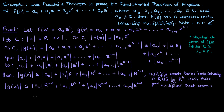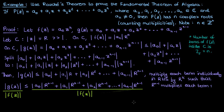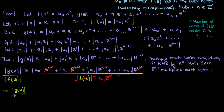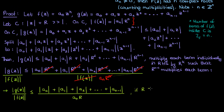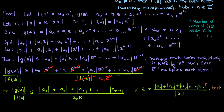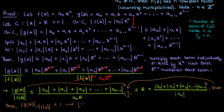Dividing both sides of the inequality by the modulus of f — which is positive, so the sign doesn't change — and substituting |f| = |a_n| · R^n on the right, we can cancel powers of R to obtain the ratio |g|/|f| bounded by a sum of coefficient magnitudes divided by |a_n|, all over R. Now if R is large enough — specifically larger than the sum of the magnitudes of the lower-order coefficients divided by |a_n| — then the right-hand side is less than 1. By the transitive property, |g(z)| < |f(z)| on the contour C.